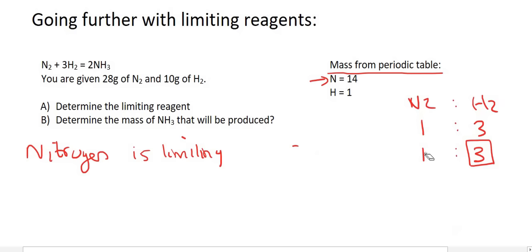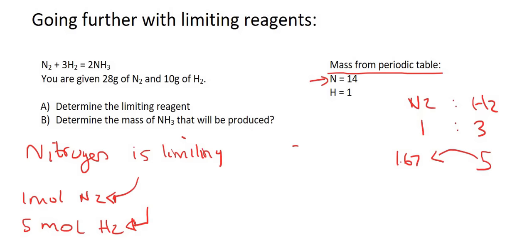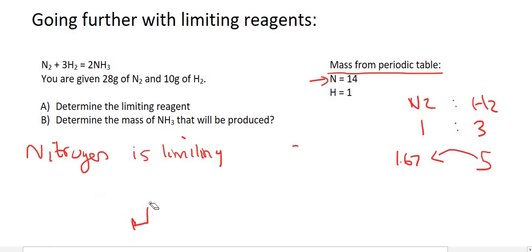We already know we have one mole of nitrogen and five moles of hydrogen. Let's say we want to use all of the hydrogen. We put five over here, then divide by three to get the nitrogen needed: five divided by three is 1.67 moles. But we only have one mole of nitrogen — not enough. So in both cases, nitrogen is our limiting reagent.